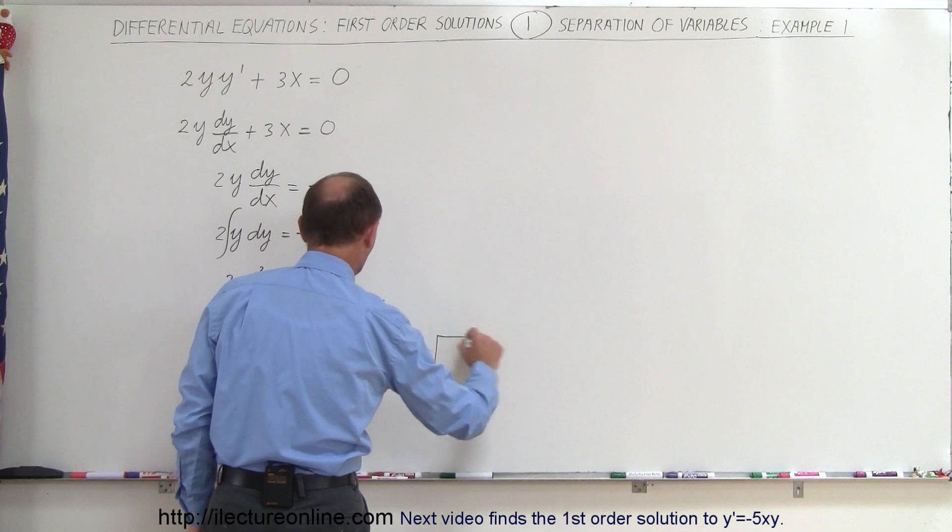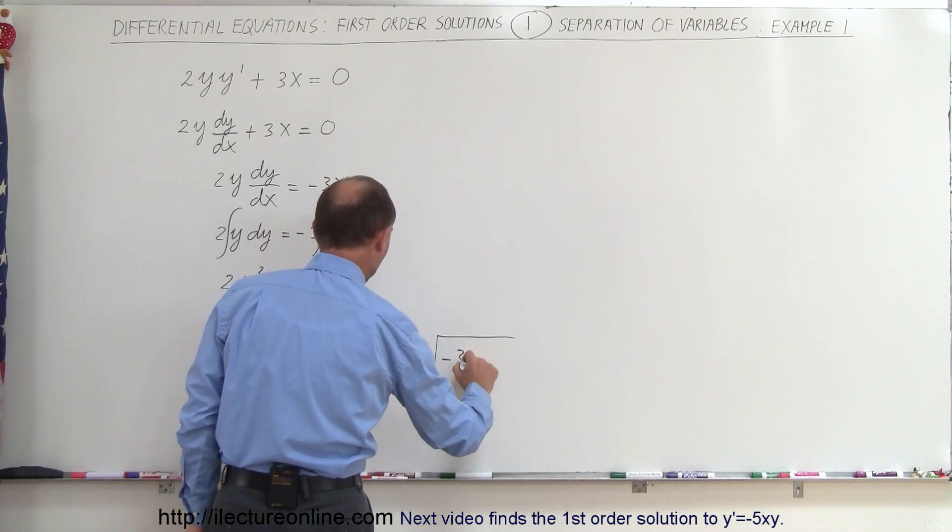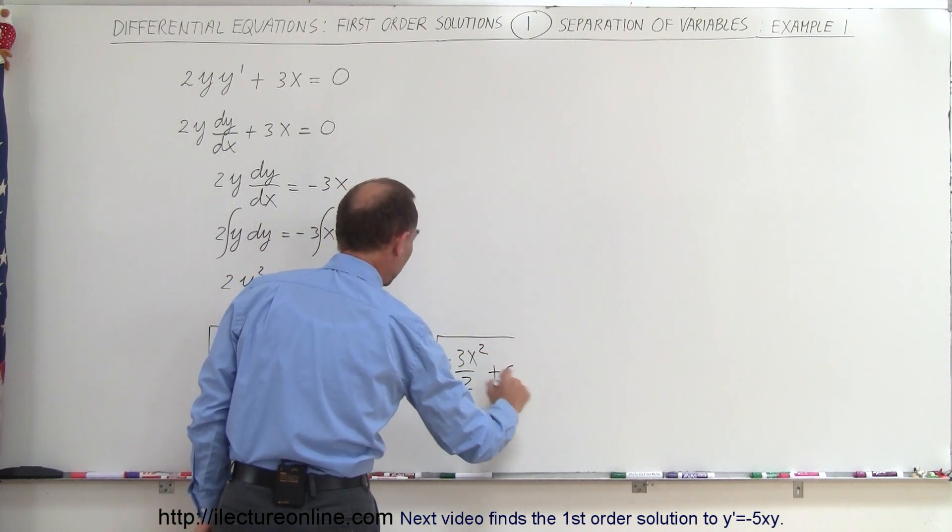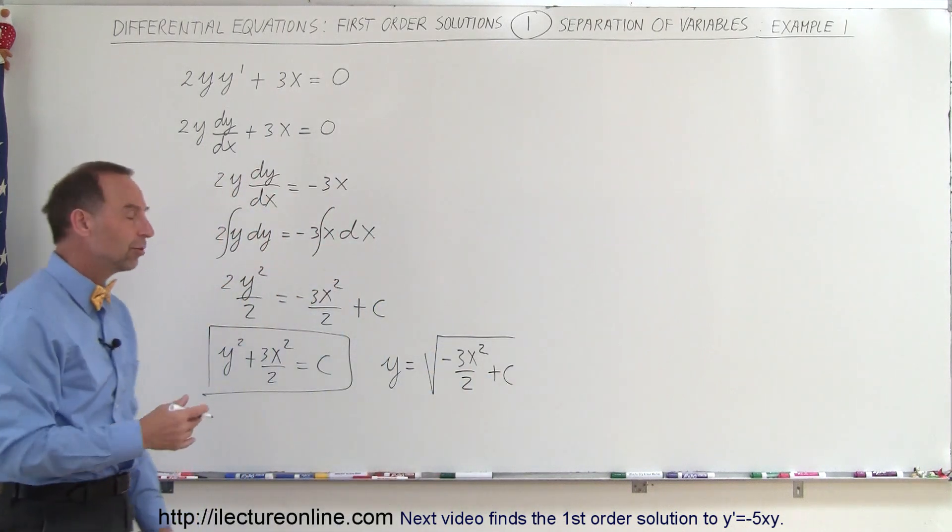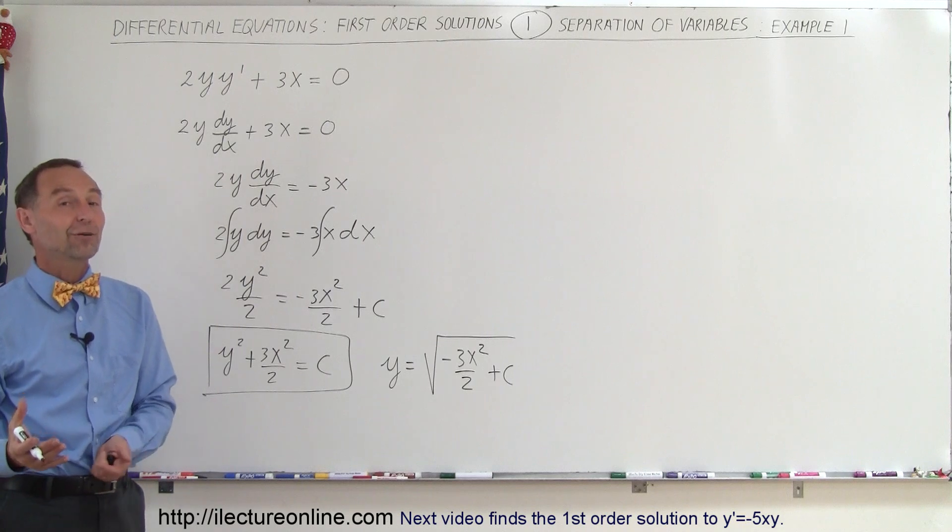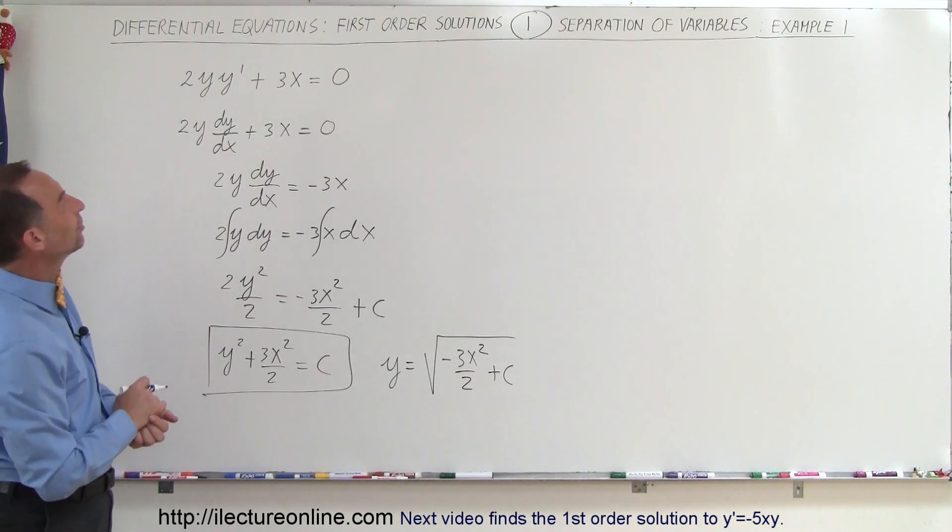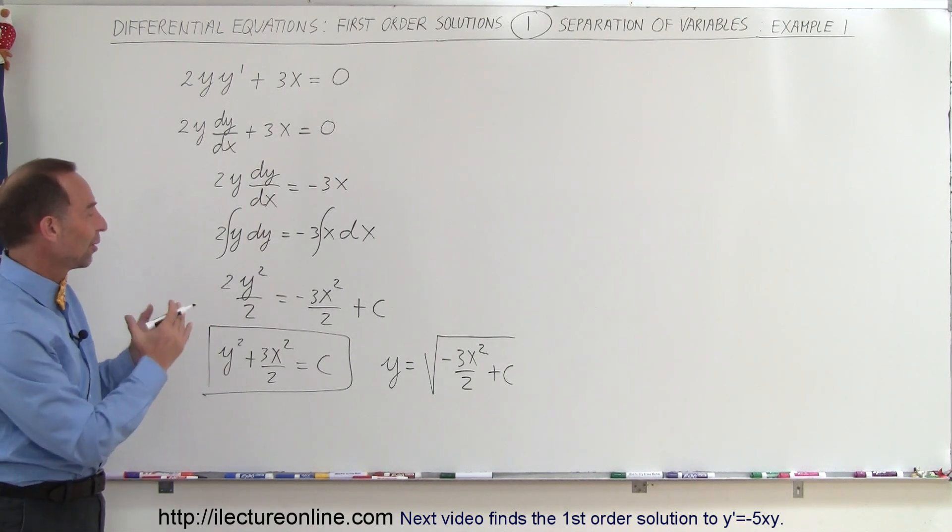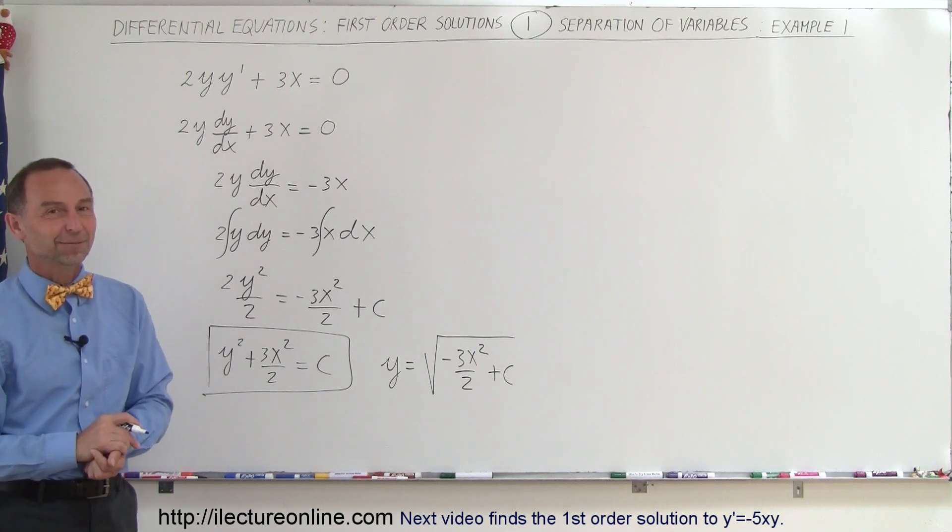You could say, well, I could write it like this: that y is equal to the square root of minus 3x squared over 2 plus c. We could write it like that as well, but it's okay to leave it in this format right here. That's how we solve first-order differential equations using the separation of variables technique. That's how it's done.